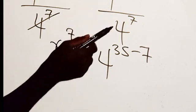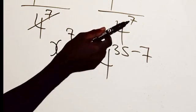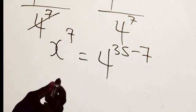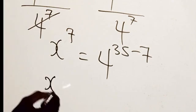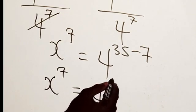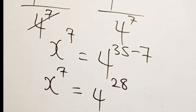Before we are having this same basis, so therefore this 7 we have to go up and we are going to subtract it from 35. So from here we have x to the power of 7, then equals here we have 4 to the power of 28, because if you take away 7 from 35 we have 28.